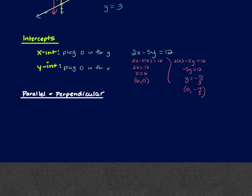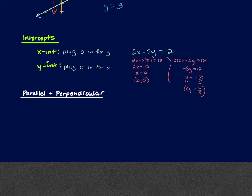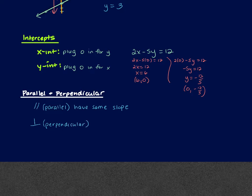Then we talked about parallel and perpendicular lines. Lines that are parallel have the same slope. Lines that are perpendicular have opposite reciprocals — you change the sign (that's the opposite part) and then flip your fraction (that's the reciprocal part).